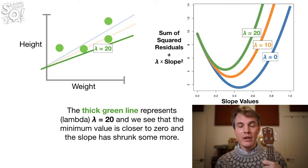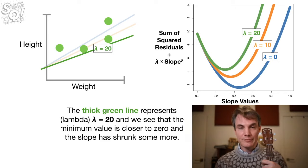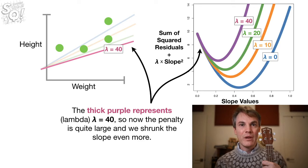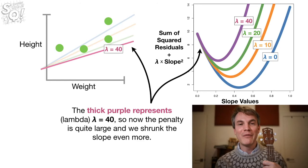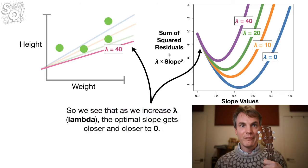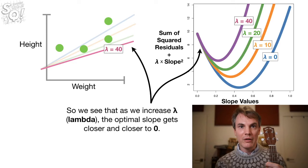The thick green line represents lambda equals twenty, and we see that the minimum value is closer to zero, and the slope is shrunk some more. However, the thick purple line represents lambda equals forty. So now the penalty is quite large, and we've shrunk the slope even more. So we see that as we increase lambda, the optimal slope gets closer and closer to zero.